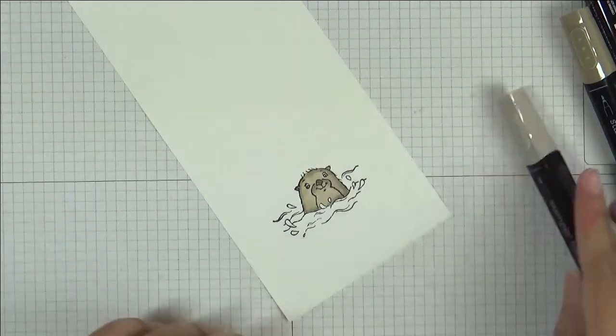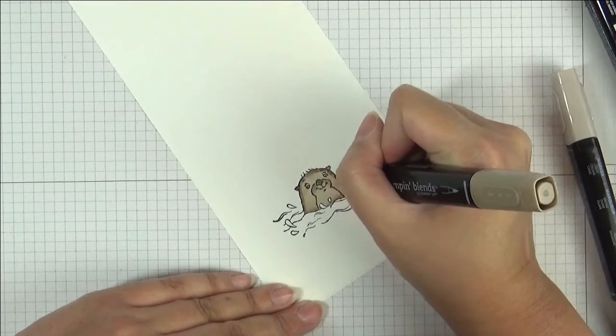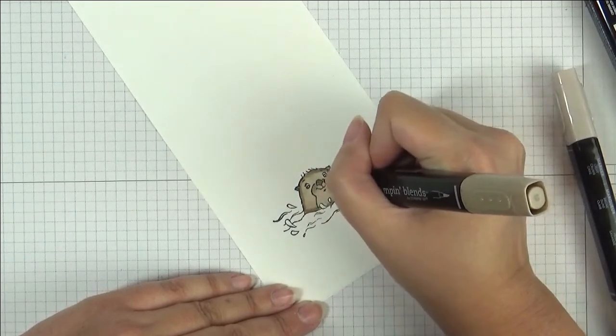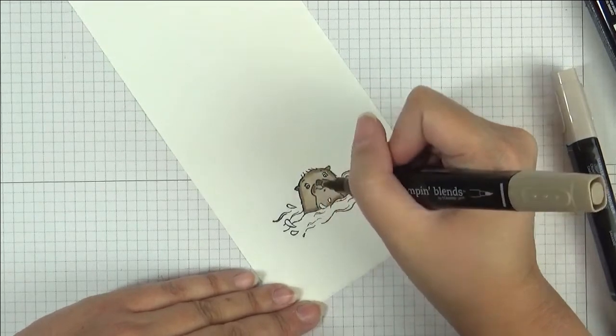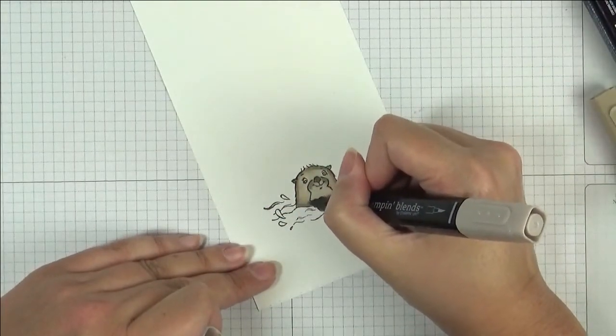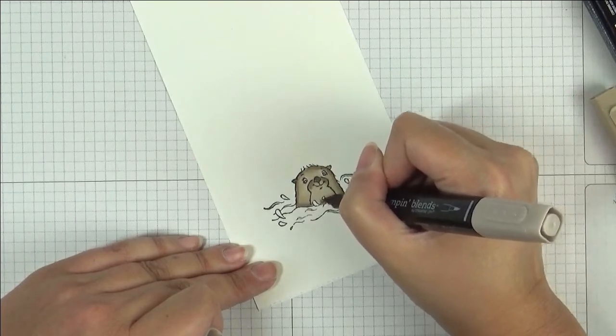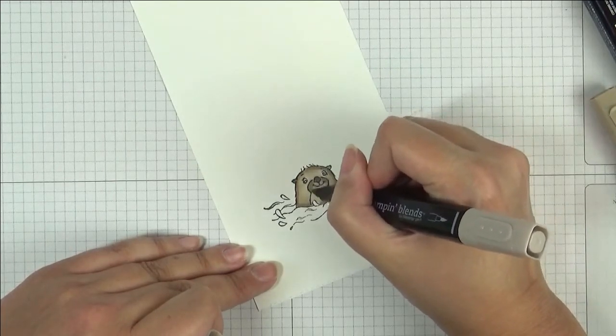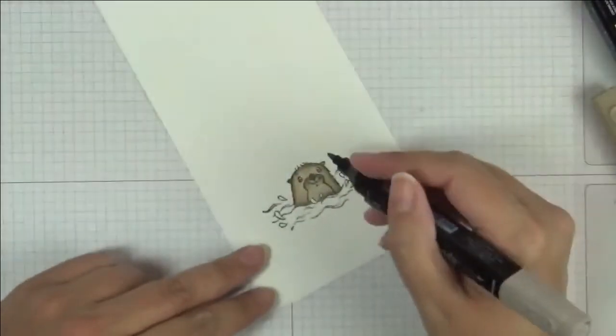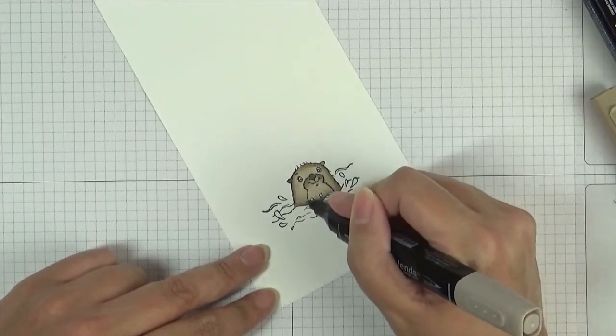I blended that out a little bit and I'm going to go back with my dark and just darken up a few little areas where maybe I blended it out a bit too much around the base. Then back in with my light just very gently, just taking away any harsh edges. That's what we've got so far. The little otter is wet at the moment. When it dries, when the alcohol dries off, it happens very quickly, it'll lighten up a little bit as well, so remember that.